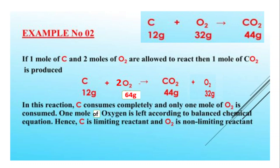Agli example mein limiting reactant carbon hai, kyunki carbon ki complete consumption ke baad reaction stop ho gaya. Jab aap balanced chemical equation observe karte hain, carbon ke 12 gram oxygen ke 32 gram ke saath react karte hain — matlab carbon ka 1 mol. Jo oxygen left ho gayi unreacted padi hai, jabke carbon apni kam mikdar ki wajah se, apni number of moles kam hone ki wajah se, jaldi consume ho gaya aur khatam ho gaya.